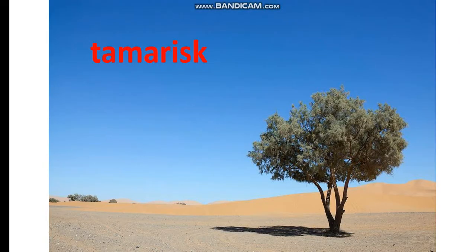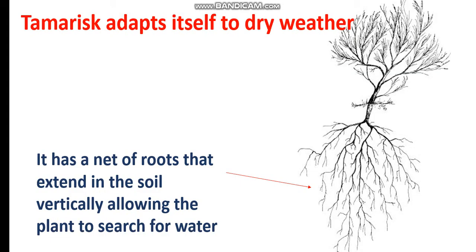Another example of desert plants: Tamarisk. The Tamarisk plant grows in the desert and adapts itself to the dry weather. It has a network of roots that extend in the soil, allowing the plant to search for water.